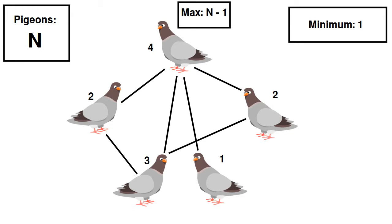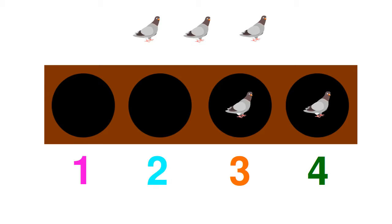So all the pigeons have between one and n minus one friends, but there are n pigeons. If you assigned a unique number of friends to each pigeon, you would be doing well until you reach the last pigeon.